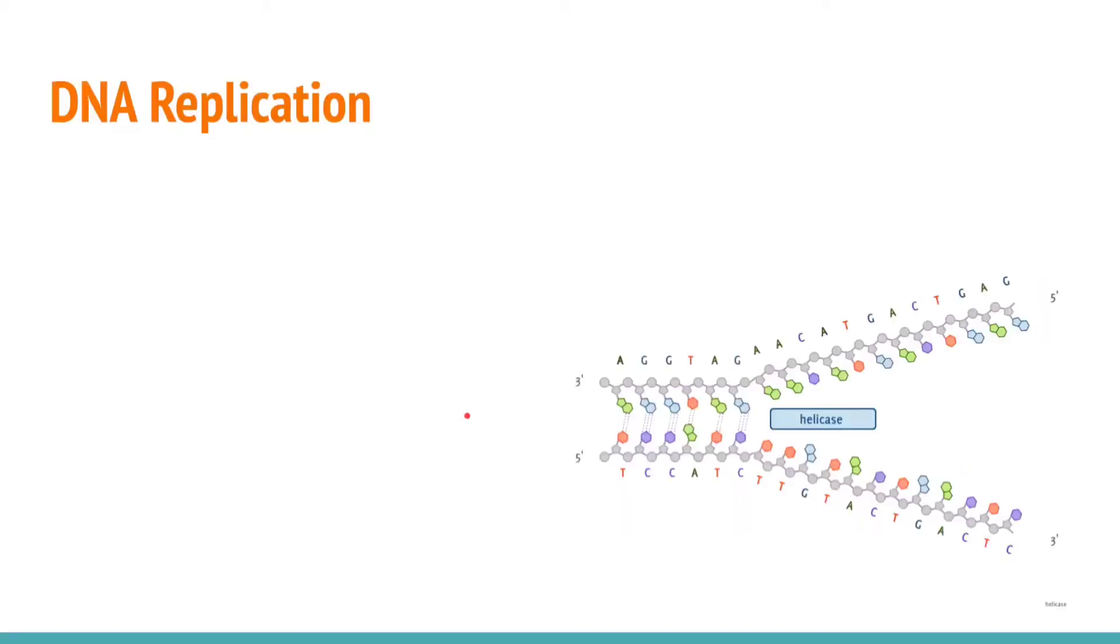In this video we're going to look at DNA replication. The first stage of DNA replication is when DNA helicase, an enzyme, unzips the double helix by breaking the hydrogen bonds between the two anti-parallel complementary strands.